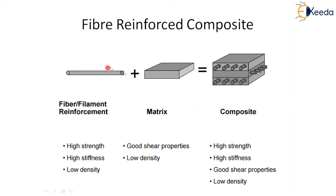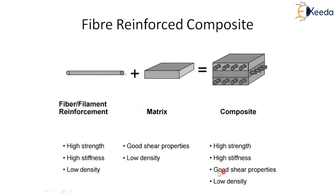For fiber reinforced composites, the fiber is a thread or filament form of material acting as reinforcement. The matrix represents the maximum percentage of the material. Together they form a fiber reinforced composite material. Fiber properties include high strength, high stiffness, and low density. The matrix contributes good shear properties and low density. The composite ultimately combines both fiber and matrix properties.